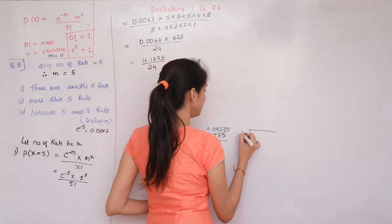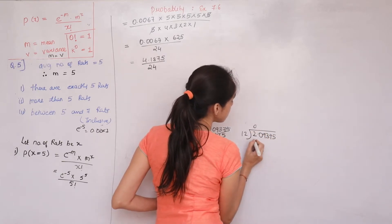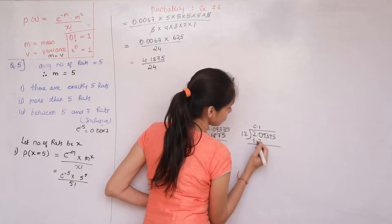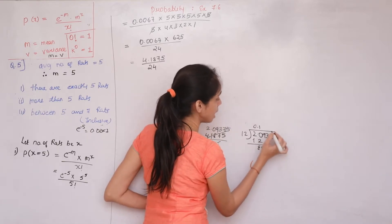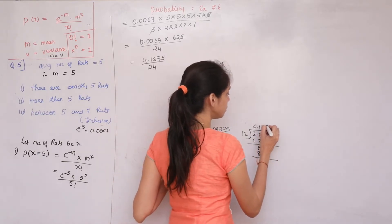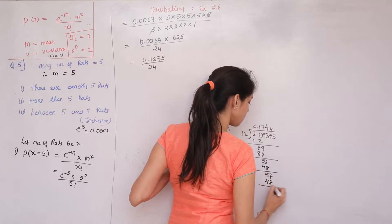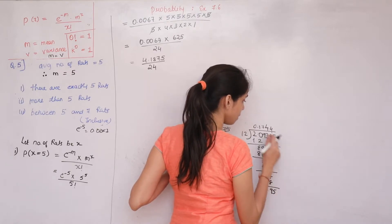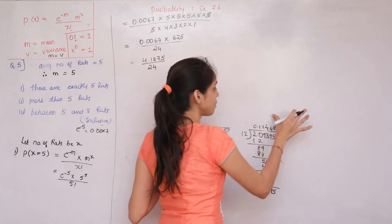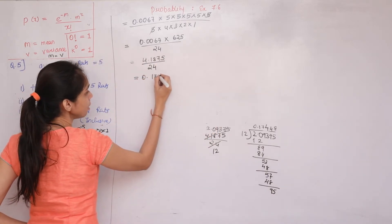Continuing the long division of 4.1875 ÷ 24, working through the steps: 41875 ÷ 24 ≈ 1744.8, which rounds to give our result. Therefore P(X=5) ≈ 0.1744.